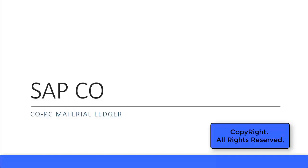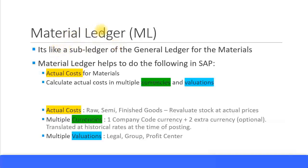In this presentation we look in more detail at the material ledger. In short, you can call it ML. It is like a sub-ledger of the general ledger for materials. In financial accounting you have the general ledger and then sub-ledgers like customers, vendors, accounts payable, accounts receivable, and asset accounting. Similarly, you have another sub-ledger called ML for the material ledger.